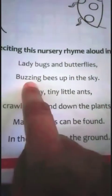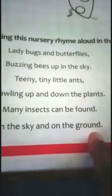Page number 60, chapter 38: insects. Before we start, take out page number 61. Now start — ladybugs and butterflies, buzzing bees up in the sky, teeny tiny little ants, crawling up and down the plants. Many insects can be found in the sky and on the ground.